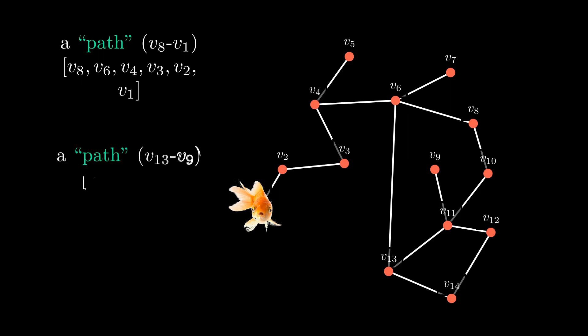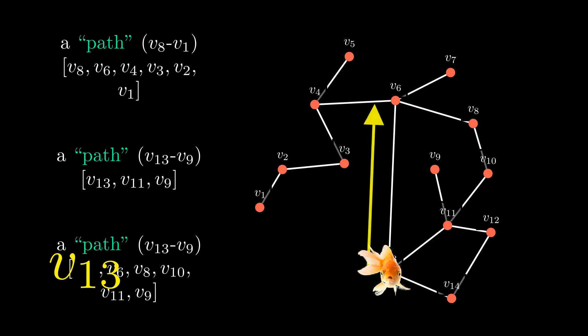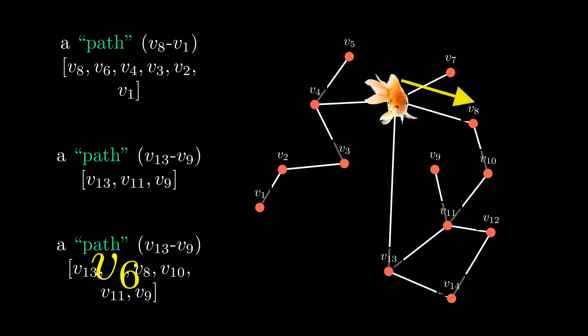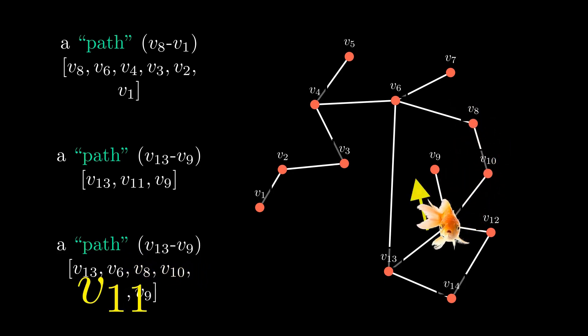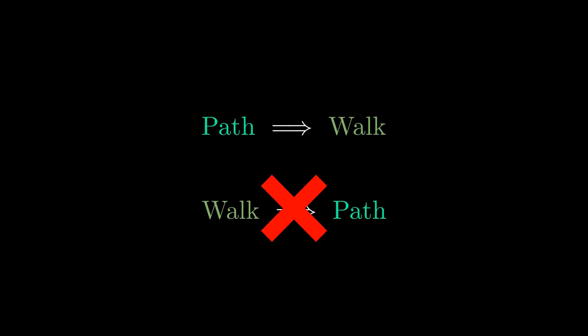This is another one, a short path. We can have more than one path from V13 to V9. So, a path is definitely also a walk, but a walk does not necessarily mean a path.